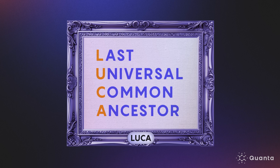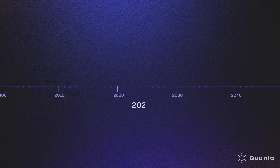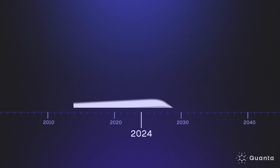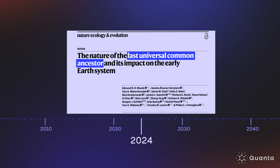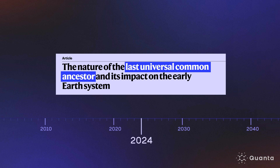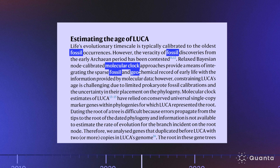Including us, including bacteria, frogs, fish, trees, fungi — everything that is alive and has a cell. In a 2024 paper, researchers peered back in time to paint the most complete picture of Luca yet, using evidence from a wide range of scientific disciplines.